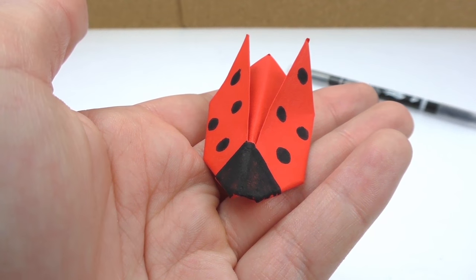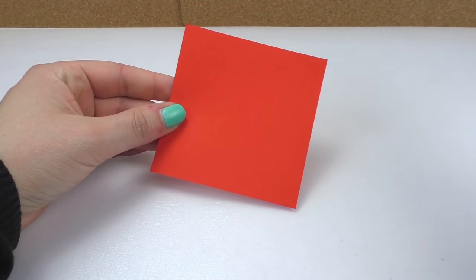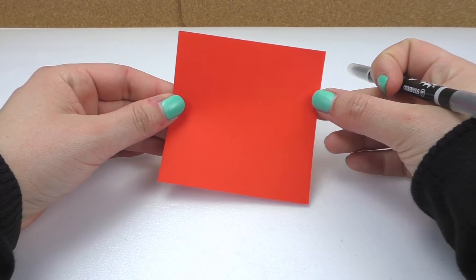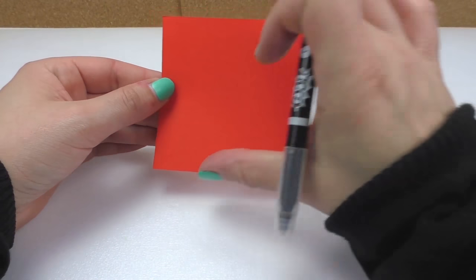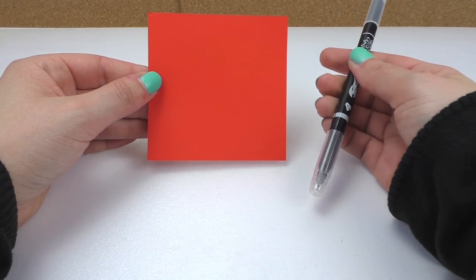It's very easy, so stay tuned. First we're going to need a square piece of paper and I have this one in red and all the sides are the same, and we also need a black marker for decoration.